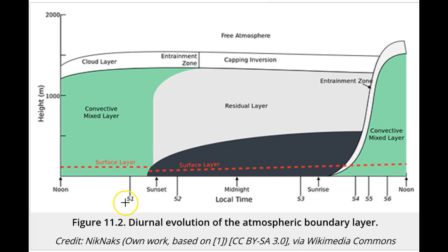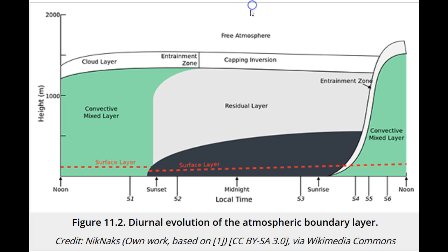With less turbulence in the residual layer, the air can speed up. The faster moving air above the slower moving air in the boundary layer causes a shear to develop between the two air masses, and sporadically turbulence is generated when the shear breaks down, mixing air and increasing the boundary layer height.